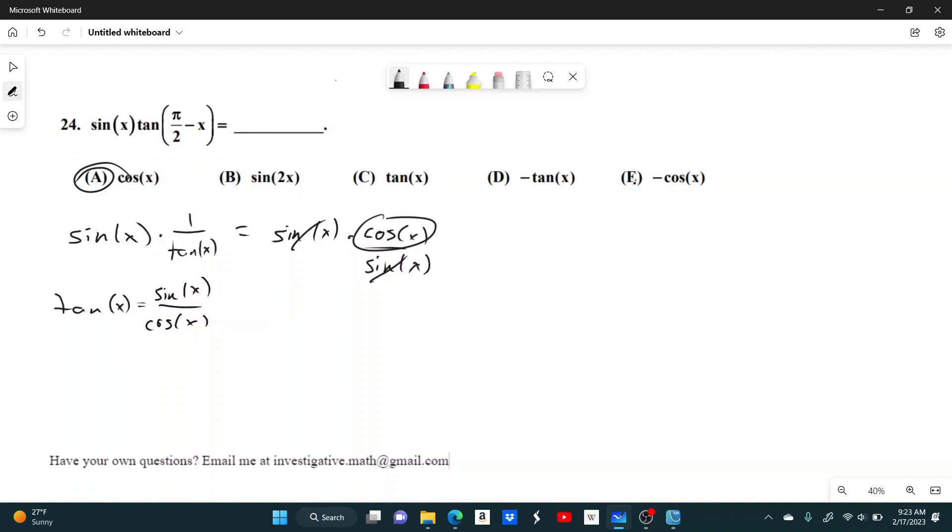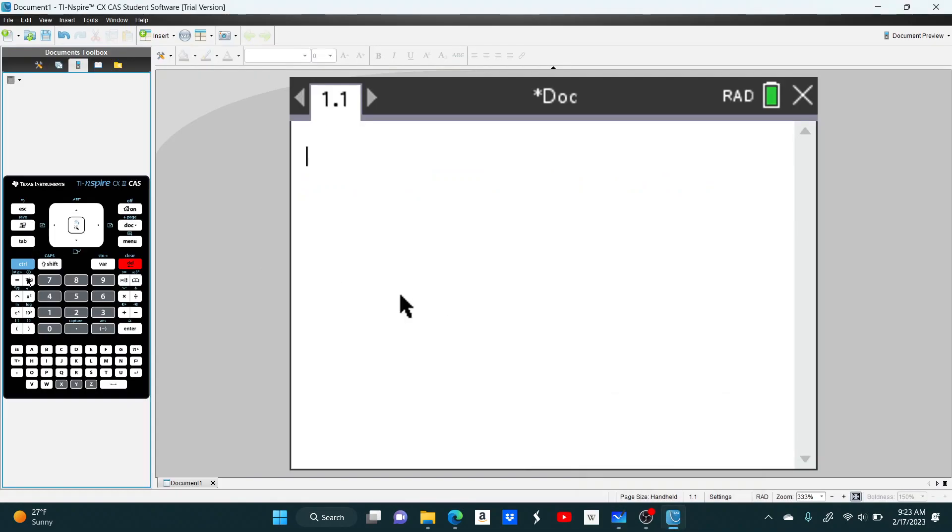For all of you that have an Inspire, this may annoy some of you that don't have an Inspire, but maybe it's a benefit of having one. A lot of times you can just type this kind of stuff into your calculator, and it'll just simplify it for you. It's actually really nice. So make sure in radians, first of all, because we have that pi over 2 in there.